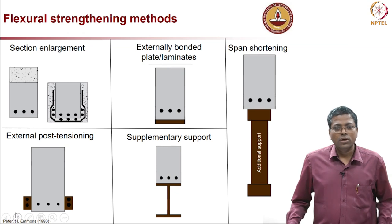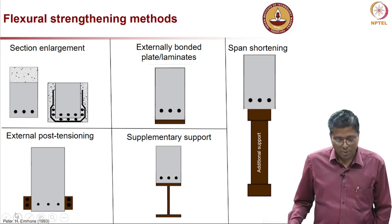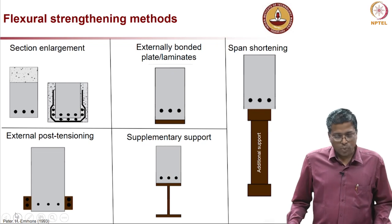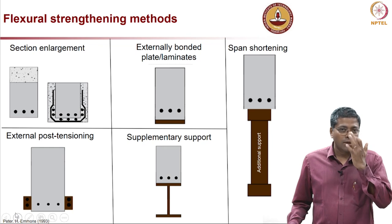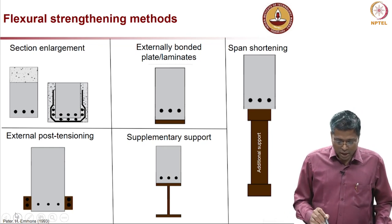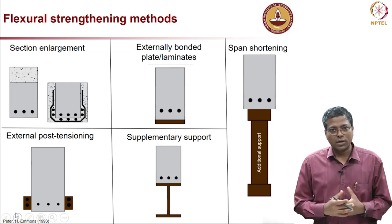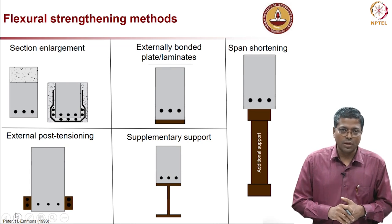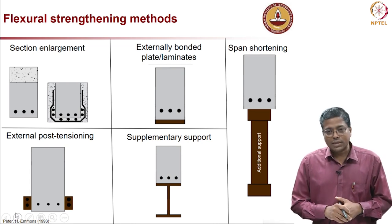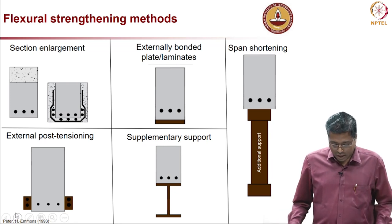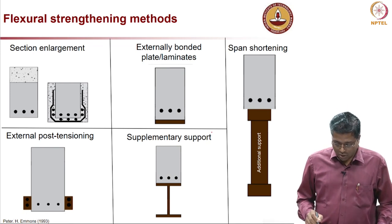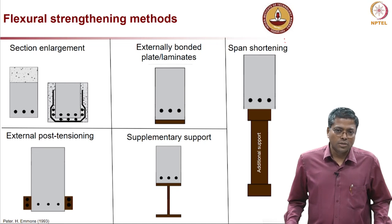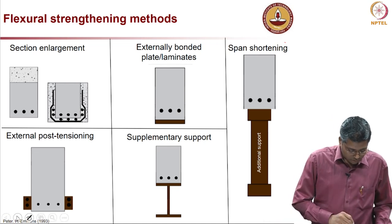First, let us look at how to enhance the flexural performance. I am showing here 5 general methodologies. The first one is section enlargement, which involves enhancing the cross section of the concrete, sometimes with and sometimes without additional reinforcement. Second is externally bonded plates and laminates. Then we will talk about external post-tensioning, supplementary support systems, and finally span shortening.